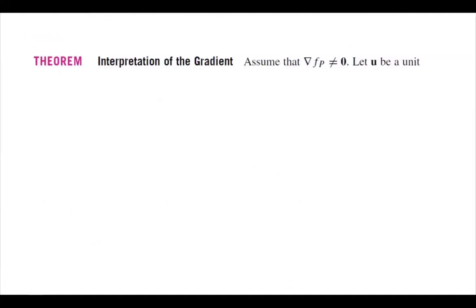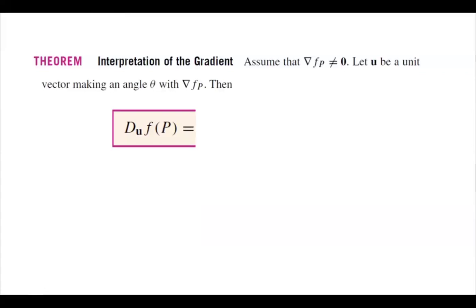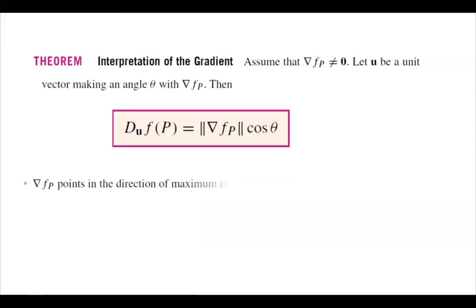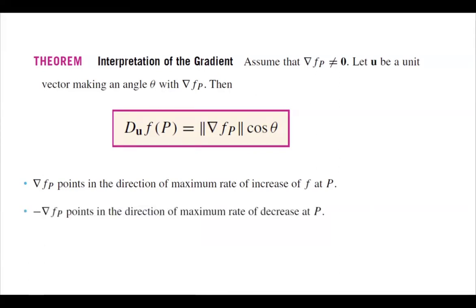What is the interpretation of the gradient? Assume the gradient is not zero, and suppose u is a unit vector making an angle θ with the gradient. Then the directional derivative of f in the direction of u can be written as the magnitude of the gradient times cos θ. The gradient of f at point P points in the direction of maximum rate of increase of f at P. If you multiply the gradient by a negative sign, it gives the direction of maximum rate of decrease at P. Finally, the gradient of f is always normal (orthogonal) to the level curve or level surface at the given point.